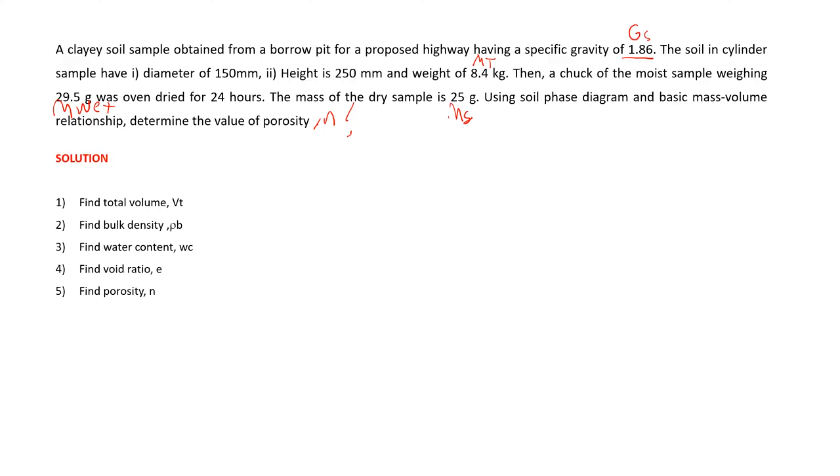First, find the total volume using the equation πr²h. The diameter is 150 mm, so the radius is 75 mm or 0.075 meters, and the height is 0.25 meters. The total volume calculated is 4.42 times 10 to the power of negative 3 cubic meters.